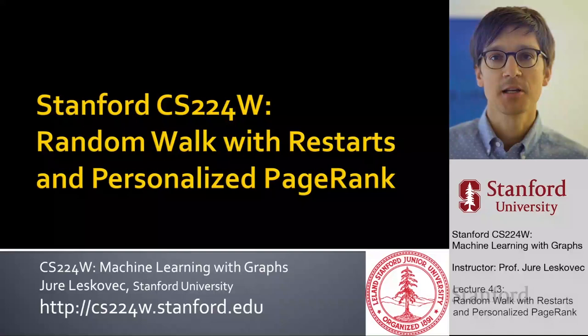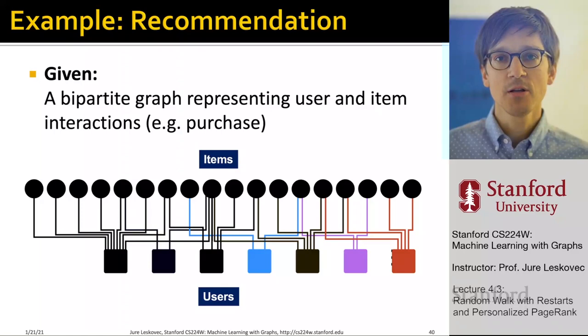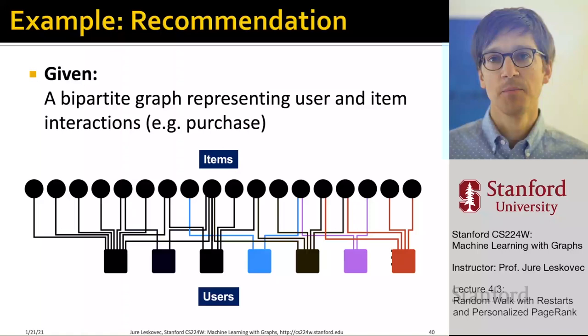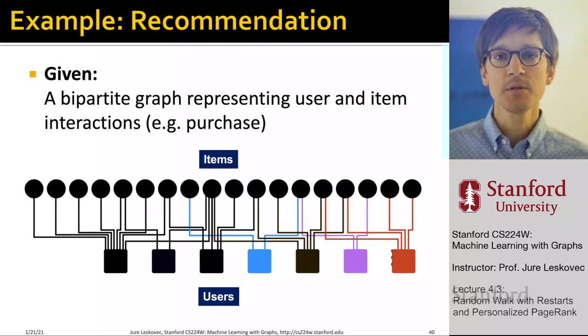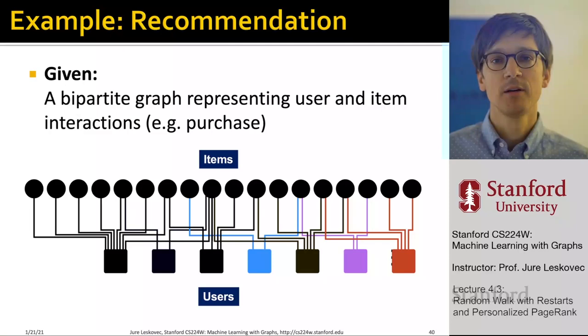Let me give you an example of how this will be very useful. We are going to talk about a problem of recommendations. Imagine you have a set of users and a set of items — perhaps products or movies — and you create interactions between users and items by saying a given user purchased a given item or watched a given movie. This is our bipartite graph representation of the user-to-item relation.